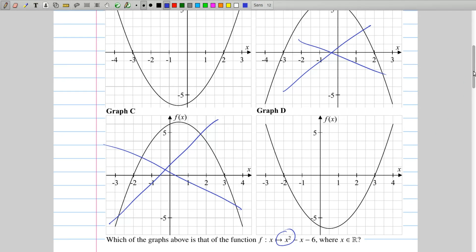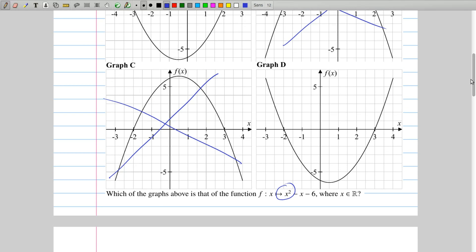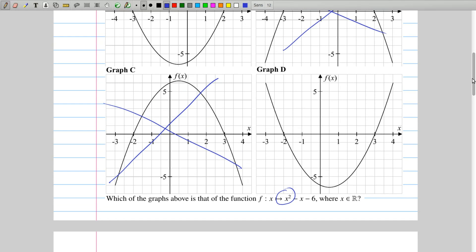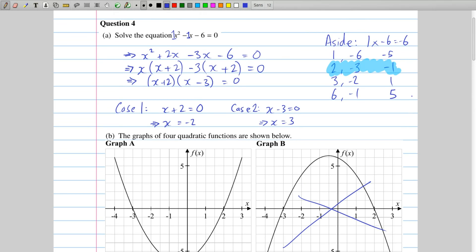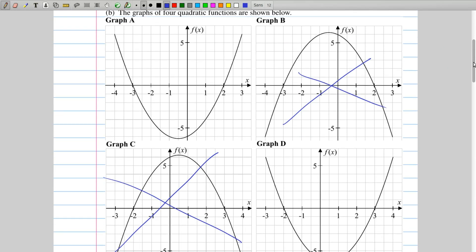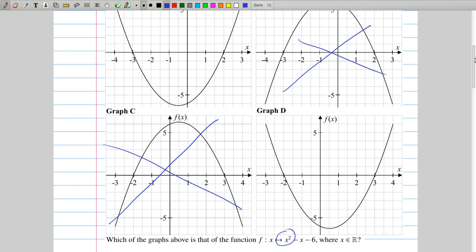So where does this function cross? Well, in part a we actually figured this out, because we said, what if x squared minus x minus 6 equals 0? In other words, what if the value of this entire function is 0? When does that happen? And that happens when x is minus 2 and plus 3. So it's the same as asking, in terms of functions, where does the function cross the x-axis? And we said that that was when x was minus 2 and plus 3.